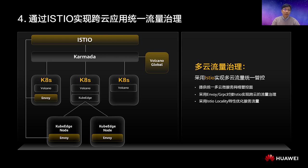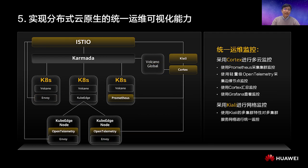Finally, don't forget the observability of cloud-native applications. In a cluster, you can use Prometheus to collect cluster monitoring data. On the edge side, you can use the lightweight agent of OpenTelemetry to collect monitoring data of edge nodes. In the central cloud, you can use open-source software such as Cortex to collect monitoring data and Grafana to visualize it. You can also use OpenTelemetry to collect mesh traces. Thanks to the multi-cluster feature of Kiali, you can monitor multi-cluster meshes in a unified manner and get a clear overview of your distributed applications.